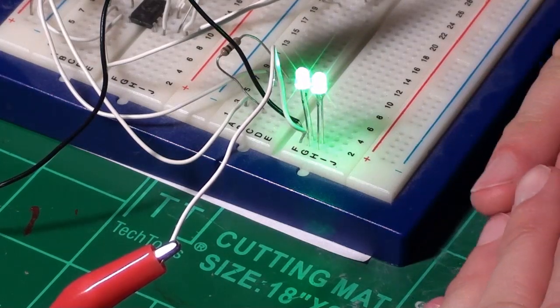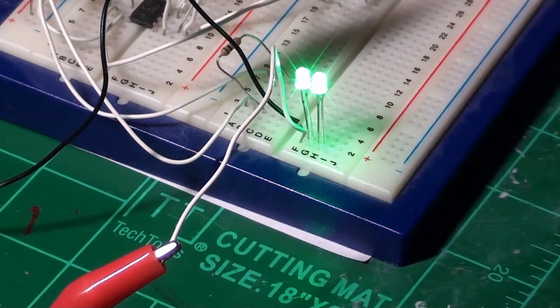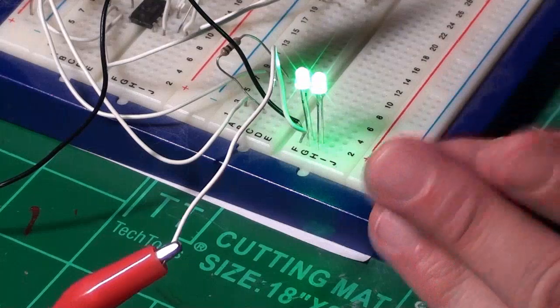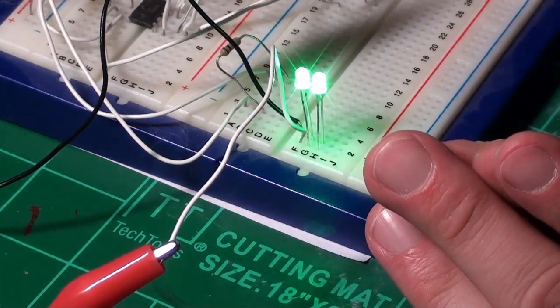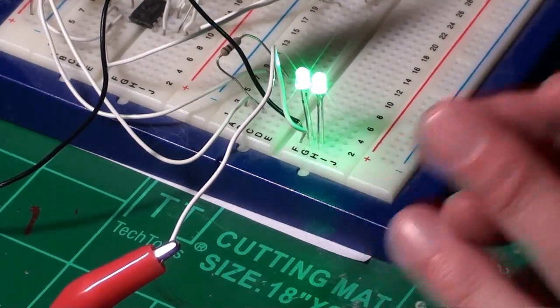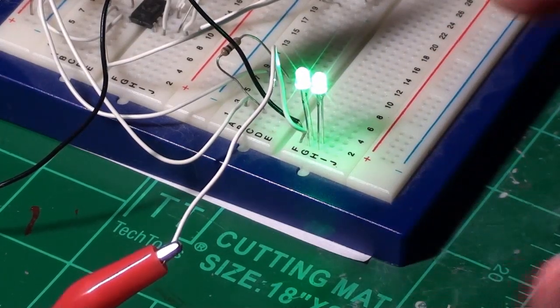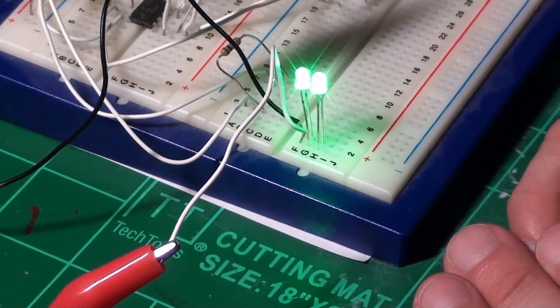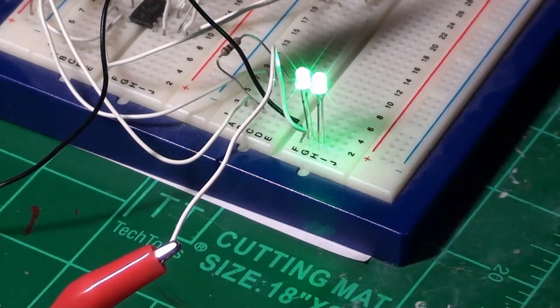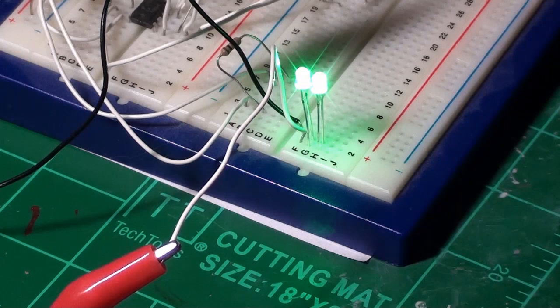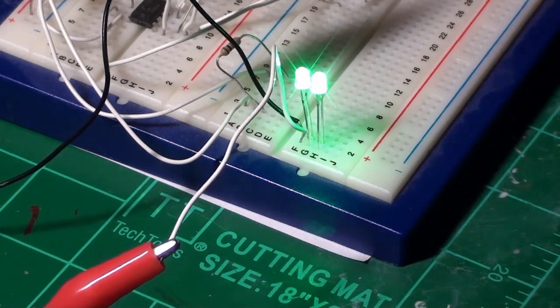The problem with parallel, though, is you have to use a resistor on each LED. You can probably get away with using one resistor, but I advise against it. The resistors are so stinking cheap, it doesn't matter. Just go ahead and use them. That's what they're for. Now, the only thing I've got left to talk about is where do you get your LEDs. So, let me reposition the camera and we'll talk about that.